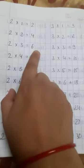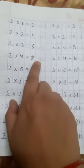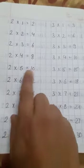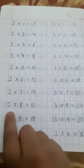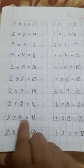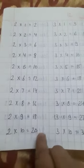2×1 is 2, 2×2 is 4, 2×3 is 6, 2×4 is 8, 2×5 is 10, 2×6 is 12, 2×7 is 14, 2×8 is 16, 2×9 is 18, 2×10 is 20.